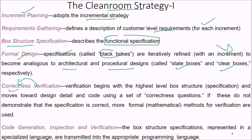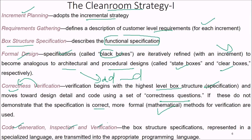Verification of correctness begins with the highest-level box — the specification — and moves toward design detail and code using a set of correctness equations. If these do not demonstrate correctness, more formal or mathematical methods can be employed. In code generation, the box structure specification represented in a specialized language is translated into the appropriate programming language.